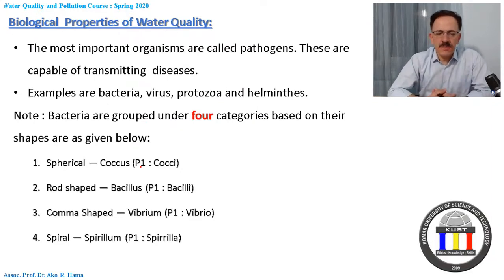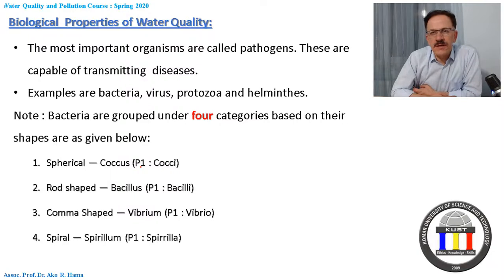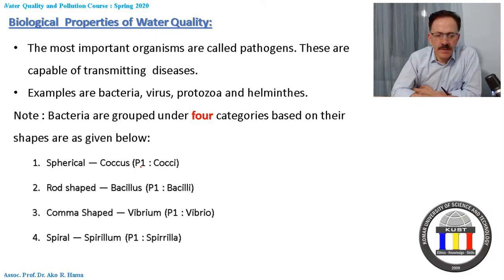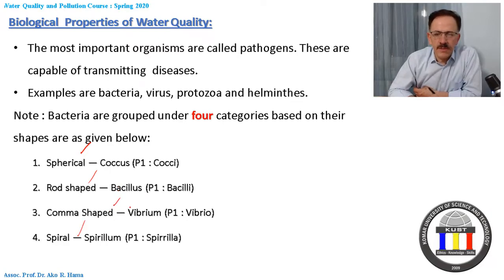The most important microorganisms are called pathogens. Pathogens are microorganisms that, when present in water, make it biologically polluted. Examples include bacteria, viruses, protozoa, and helminths — all are called pathogens. In terms of shapes, we can classify pathogens as spherical, rod-shaped, comma-shaped, or spiral (spirillum) shaped bacteria.